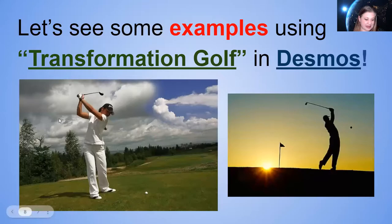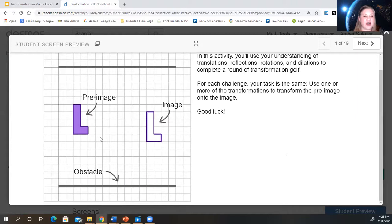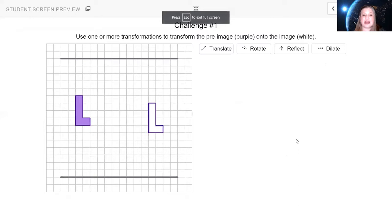So let's see some examples using transformation golf in Desmos. This is transformation golf. You can see the pre-image here is purple and the image here is white. We want to start here and end up here. So just like a hole in one in golf, we want to get the pre-image into the outline of the image. Maybe not in one but in as few tries as you can. That's the challenge. There are obstacles. You can see the gray lines here and further on there'll be gray blocks. If you hit those it will cause your pre-image to crumble.